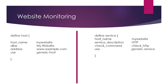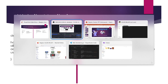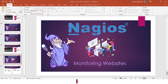We have used four directives: host name, alias, address, and use for host definition, and for service definition: host name, service description, check command, and use. The check_http is a plugin that exists in the libexec directory of Nagios and helps us check whether the URL is reachable or not. Let me go back to the console.